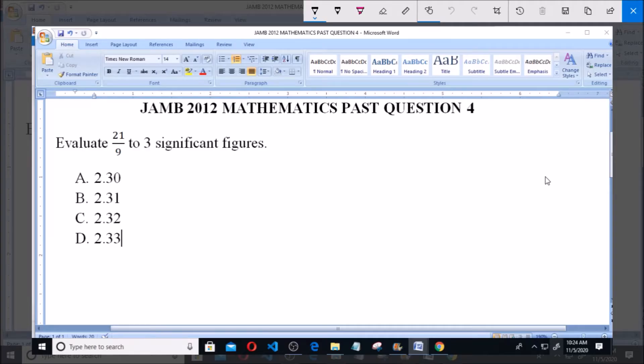Hello, good day and welcome. I will be answering JAMB 2012 Mathematics past question 4. Evaluate 21 over 9 to three significant figures. A: 2.30, B: 2.31, C: 2.32, and D: 2.33. Now we have 21 divided by 9.